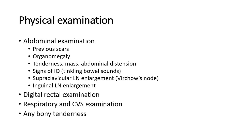On abdominal examination, look for previous scars and check for incisional hernia. Check for organomegaly such as an enlarged liver, any tenderness or palpable mass, and abdominal distension suggesting intestinal obstruction. Listen for tinkling bowel sounds on auscultation. Check for lymph node enlargement, especially the virchow's node and inguinal lymph nodes. Complete the examination with a digital rectal examination to feel for any mass, contact bleeding, the level of the anal verge, muscle tone, and tumor mobility. Also perform respiratory and cardiovascular examination for pleural effusion or signs of anemia such as tachycardia, and check for bony tenderness suggesting bone metastasis.